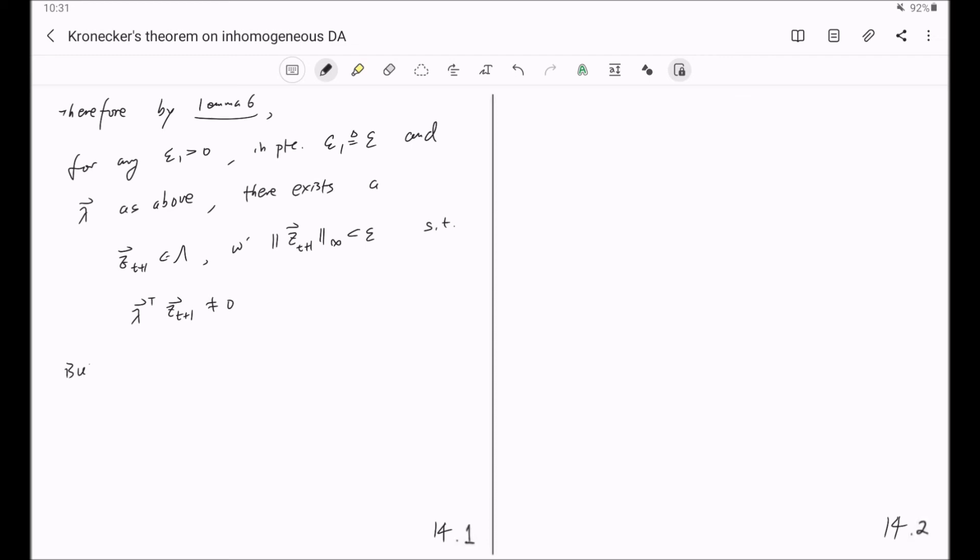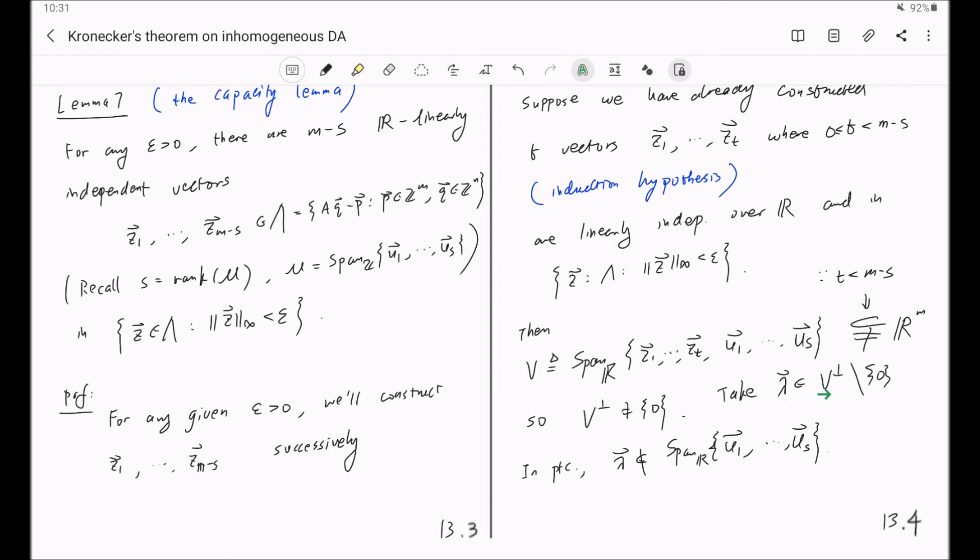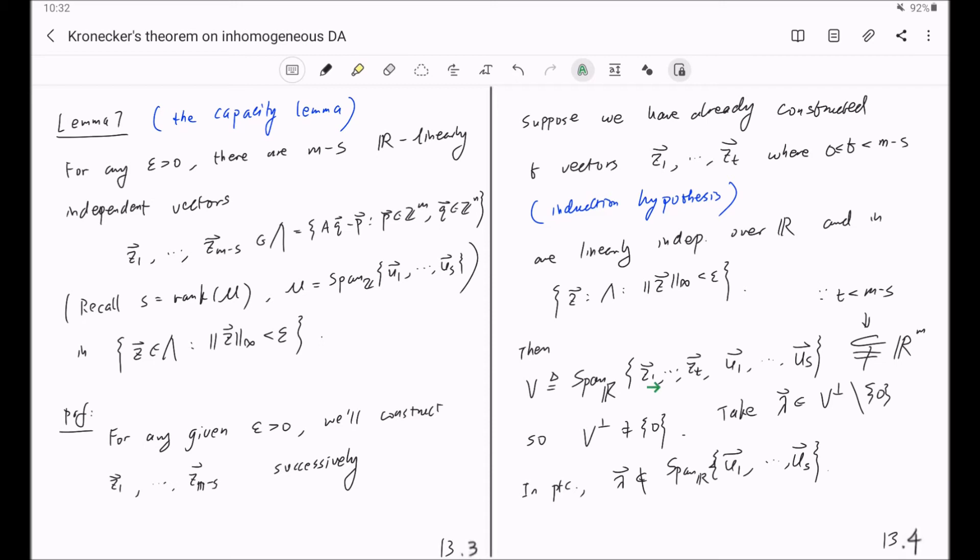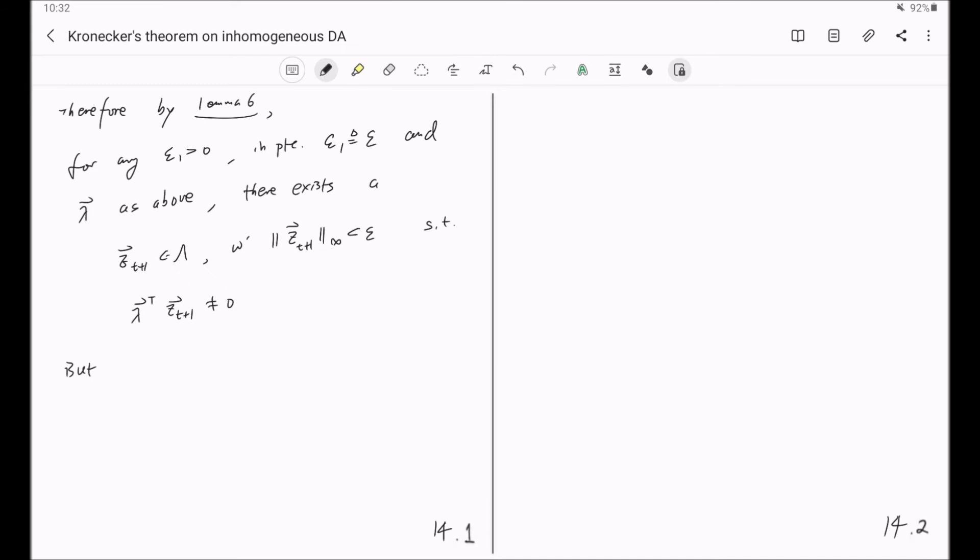But by our choice of lambda, we took lambda in the orthogonal complement of V, which is spanned by Z1 through ZT and U1 through Us. In particular, this lambda will be orthogonal to all those Z1 through ZTs. So lambda^T zi is equal to 0 for any i from 1 to T.